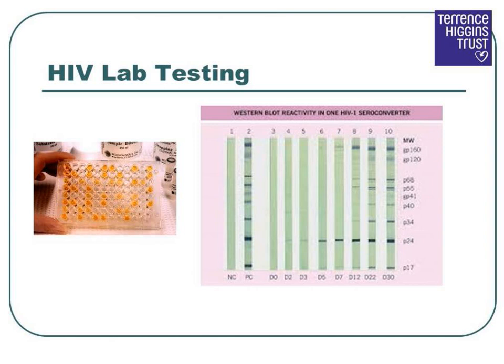ELISA tests were originally invented to screen blood donations for HIV. They are very accurate — to the tune of 99.5% — and also very sensitive, so that they are able to screen out the maximum possible number of infected persons. However, they are not very specific, and therefore another kind of test is necessary to make up the complete HIV test.